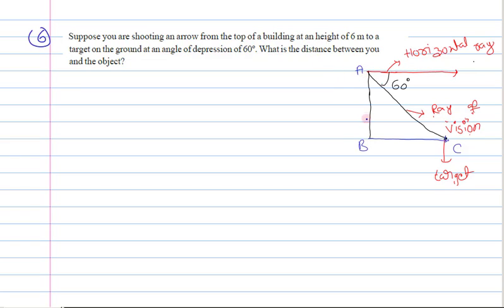Suppose AB is the height of the building. We know the height is 6 meters and C is our target. You are observing this target from point A.